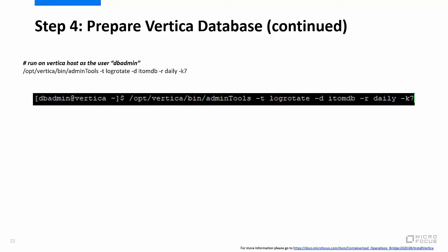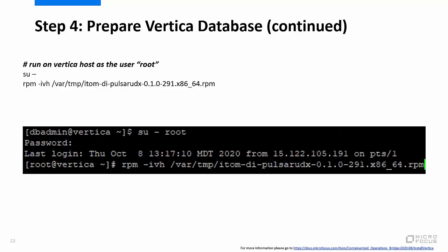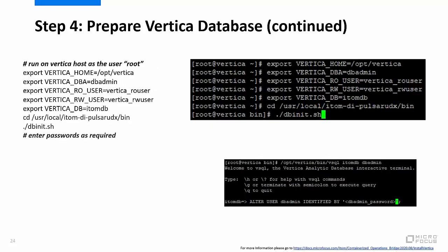Next, configure logging to ensure that the database is regularly cleaned out and that the logs are only kept for a week, as shown on your screen. Next, copy the Koso Vertica plugin package from the master node to the Vertica node using the commands displayed on your screen. Next, install the Koso Vertica plugin package on the Vertica node. Then, set environment variables required by the DB initialization script and run the DB init script using the commands displayed on your screen.